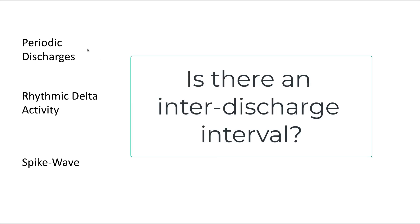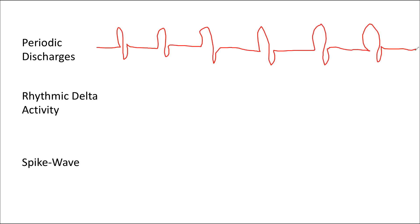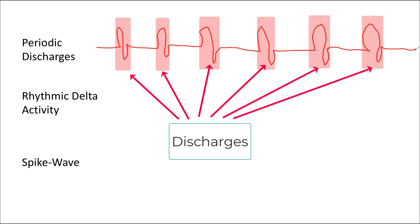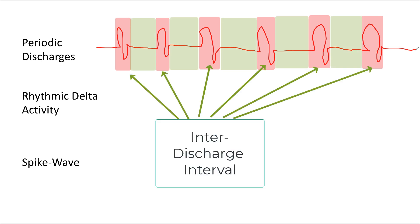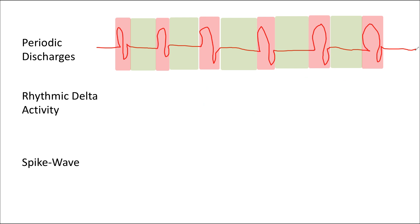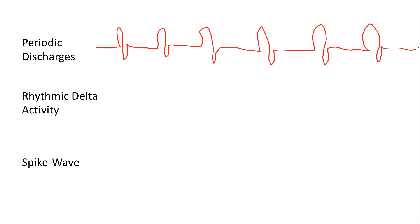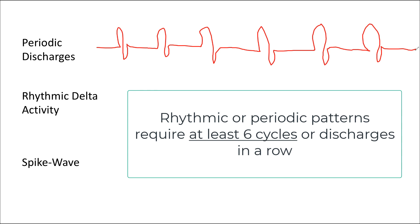It can be very difficult for learners to distinguish between periodic discharges, rhythmic delta activity, and spike wave activity. But the most important thing is the presence or absence of an inter-discharge interval. Periodic discharges consist of discharges that may have varying morphologies and levels of complexity separated by a clear inter-discharge interval. Another important element is that you have to see six cycles or six examples of these patterns in a row for it to qualify as a rhythmic or periodic pattern.